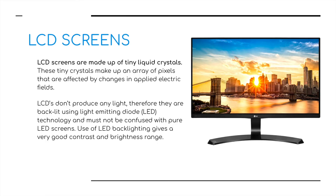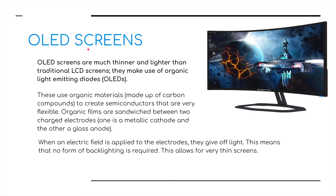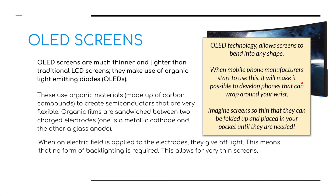LCDs use some other form of backlighting, whereas OLED screens — which you may have in your homes — use organic light-emitting diodes. Monitors and TV sets are now using this technology. OLEDs use organic materials made up of carbon compounds to create flexible semiconductors. Organic films are sandwiched between two charged electrodes: a metallic cathode and a glass anode. When an electric field is applied, they give off light, meaning no backlighting is needed. This allows for very thin screens. OLED technology also allows screens to be bent into any shape, making it possible to develop phones that can be wrapped around your wrist or folded up and placed in your pocket.